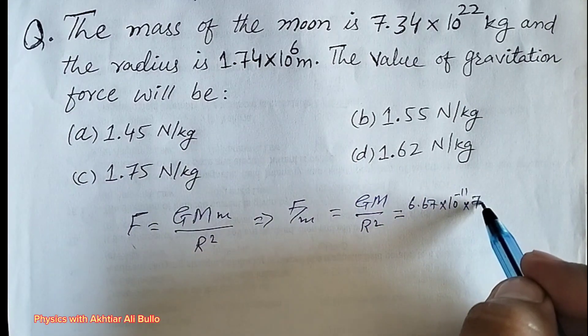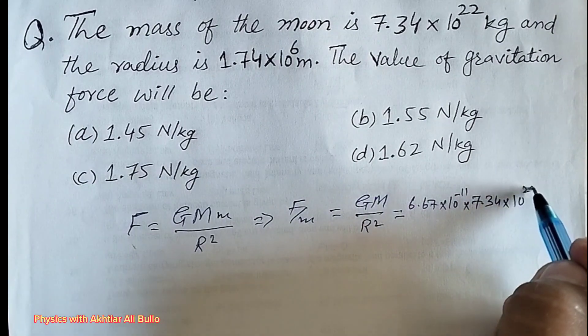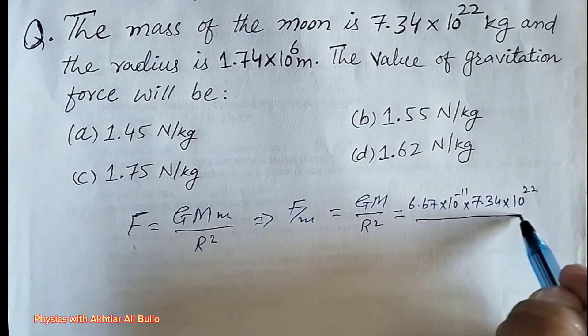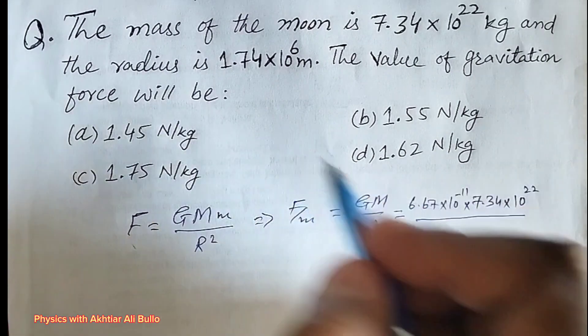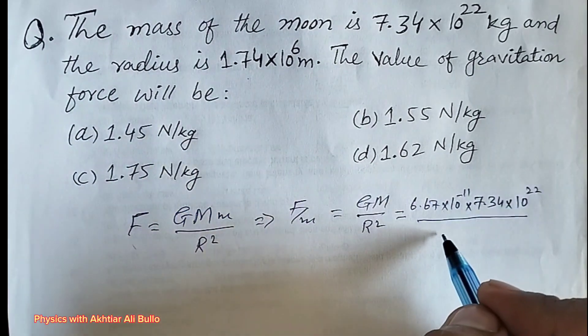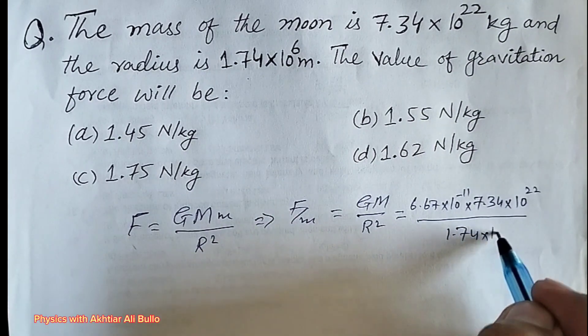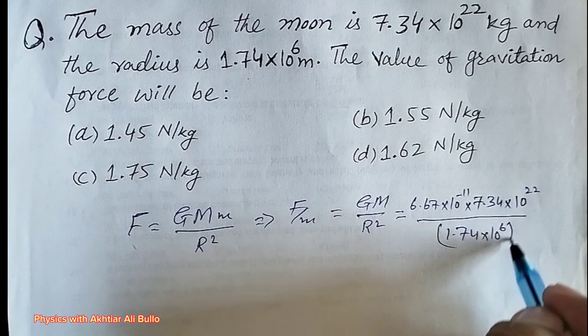divided by r square means the radius of moon is 1.74 into 10 raised power 6 whole square.